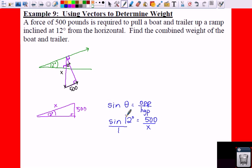Well, when you solve this, if you do this by cross multiplying, basically what happens is your X and your sine of 12 degrees just swap spots. So you're going to get X is equal to 500 divided by your sine of 12 degrees. And when you plug that in, your force is going to be measured at 2,405 pounds.